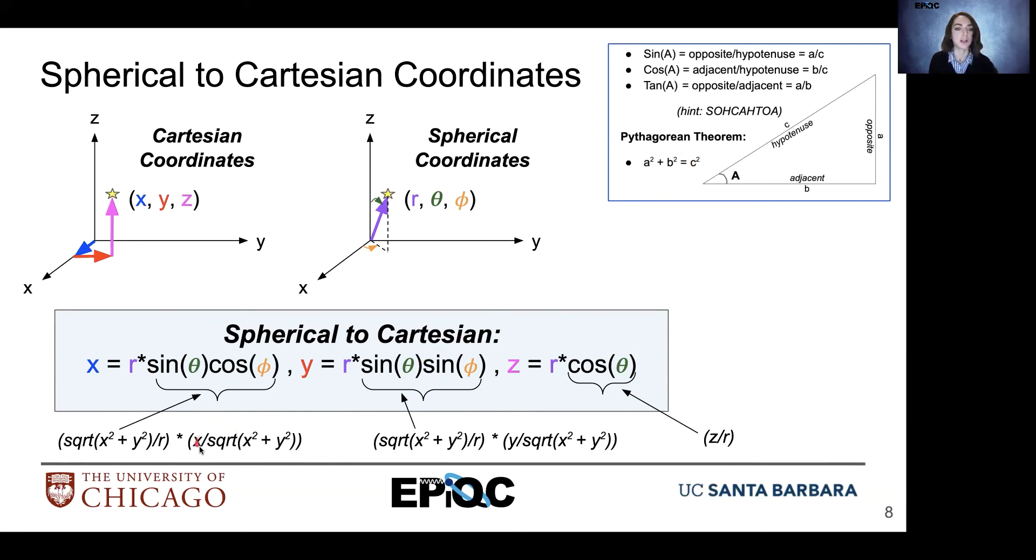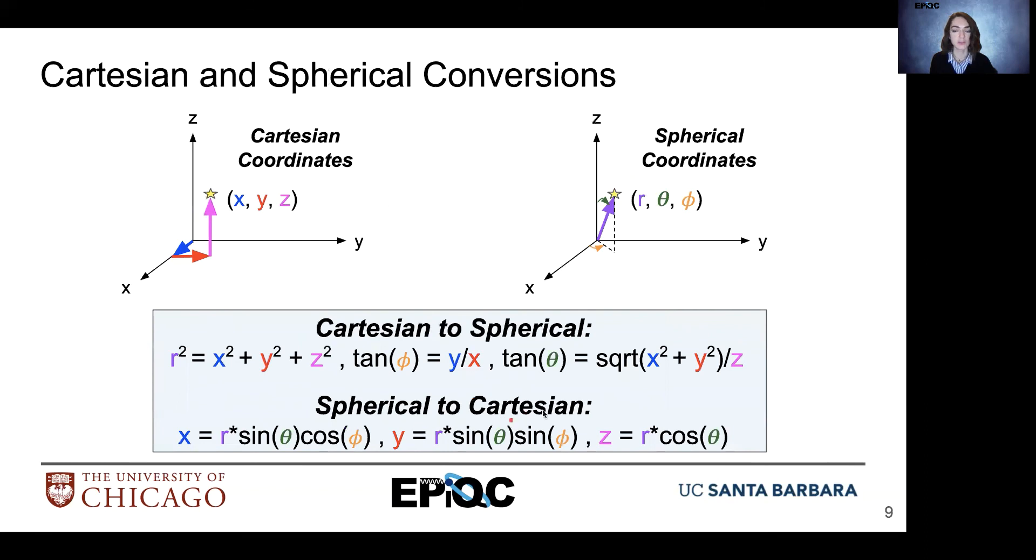And then we're left with x. So similarly, we can use those types of relationships in order to form our equations that give us y and z to convert from spherical to Cartesian coordinates. So these equations are summarized in this slide here.